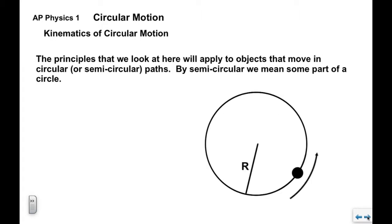The principles we look at here will apply to objects that move in circular or semicircular paths. By semicircular we mean a part of a circle — so we could be looking at just a half of an orbit or a quarter of a circle. As long as that piece of the path is circular, all of these principles will still apply.